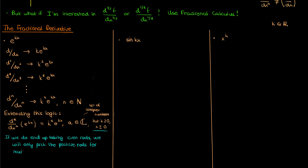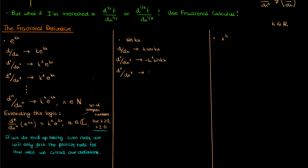In later videos, provided people are interested, we'll extend this definition to include negative k and negative x. Now let's find the fractional derivative of the sine function. The first derivative of sine kx is k cosine kx, the second derivative is negative k squared sine kx, and the third derivative is negative k cubed cosine kx, with k coming out each time via the chain rule.